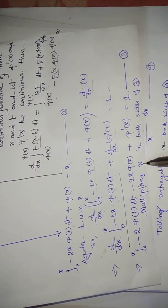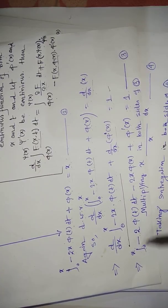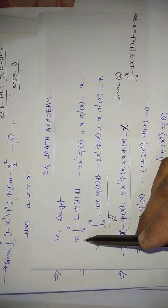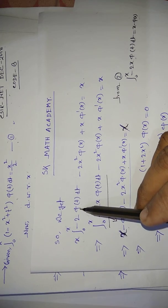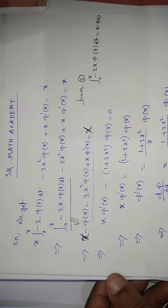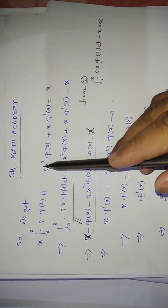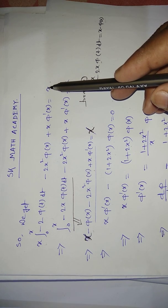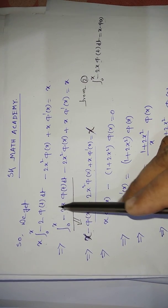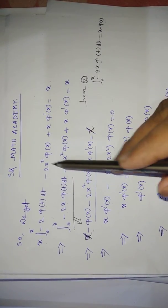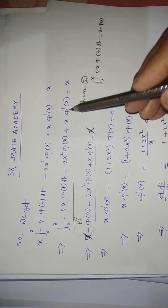Multiplying x on both sides of equation (3): x·[integral of −2φ(t) dt] − 2x²φ(x) + x·φ'(x) = x. Also, from equation (2): the integral of −2x·φ(t) dt = x − φ(x), so multiplying through yields −2x²φ(x) + x·φ'(x) = x.